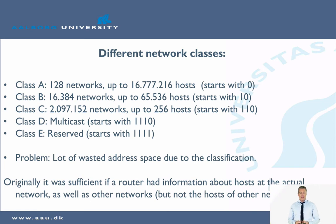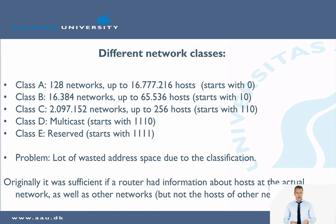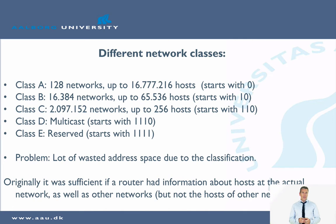You can see how many different networks and how many different hosts are accommodated by each class. The problem is that a lot of address space is wasted due to this classification. For example, if an organization needs 100,000 hosts it needs a class A network, but there are only 128 of those, so we are soon running out. This traditional division has shown to be problematic. Originally, a router only needed information about hosts in its own network and just network-level information for all other networks, which was the design idea — but it has not scaled well.